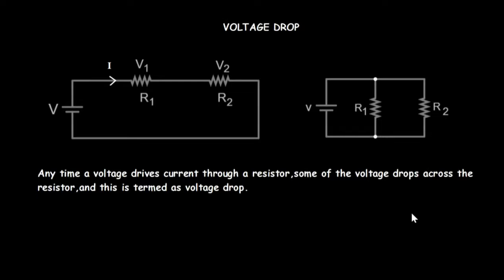In this lesson we will learn about voltage drop — how to account for voltage drop in electrical circuits. Any time a voltage drives current through a resistor, some of the voltage drops across the resistor. This is what we term the voltage drop.